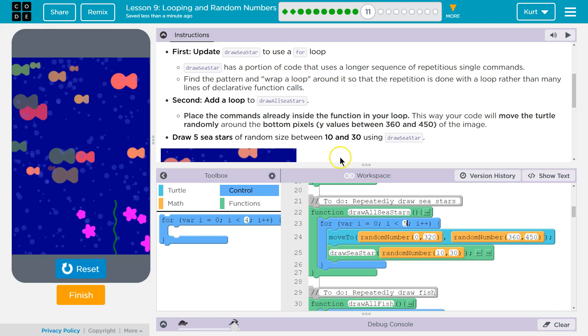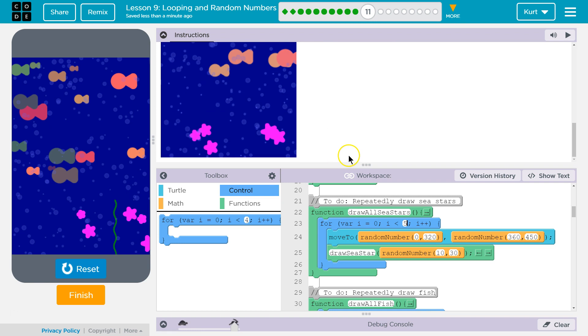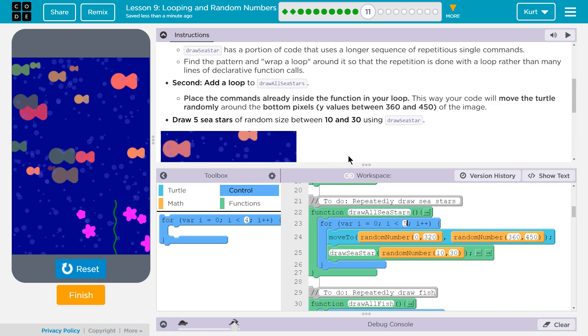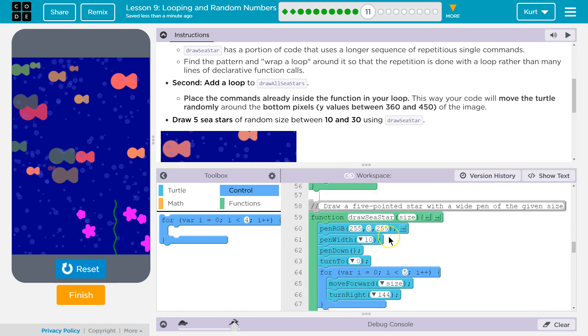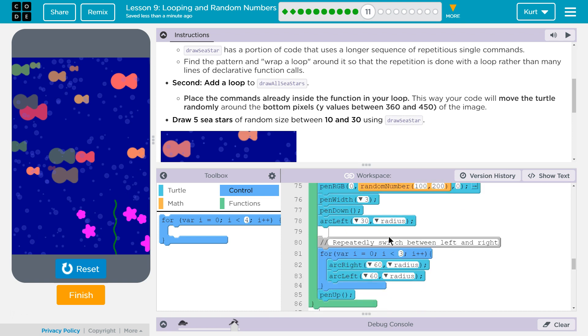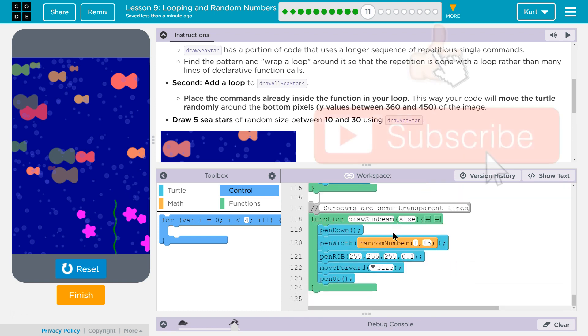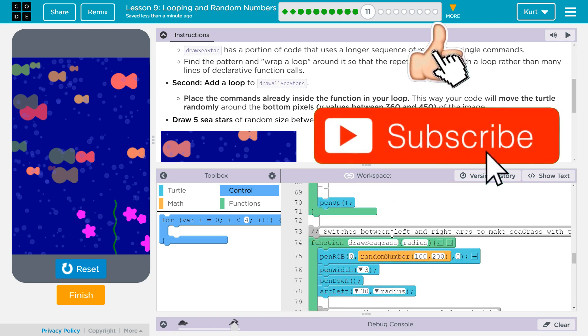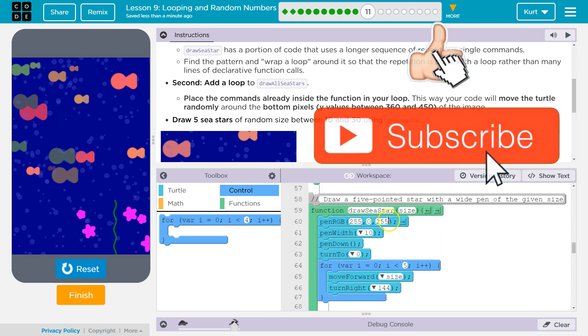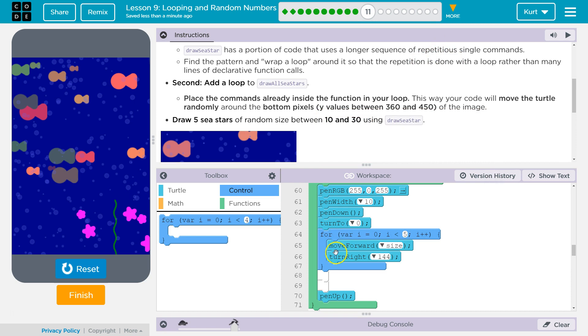Awesome. Let's keep going. And, remember, what I needed to add was this for loop here, and then down here, I needed to get rid of this repetitive function calls, as they worded it. Right? Draw all C-stars. I got rid of the five of these, and I'm using a loop instead. Awesome. Let's keep going.